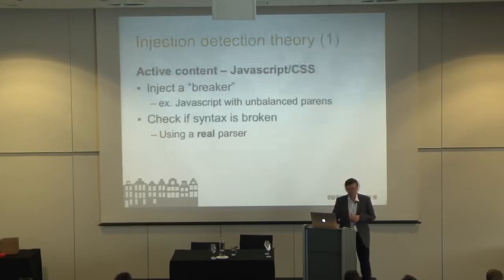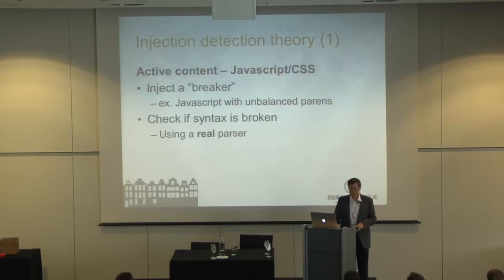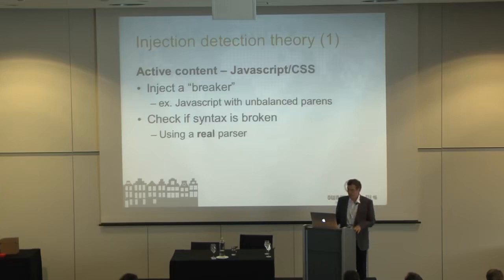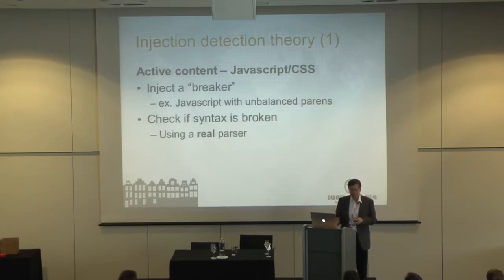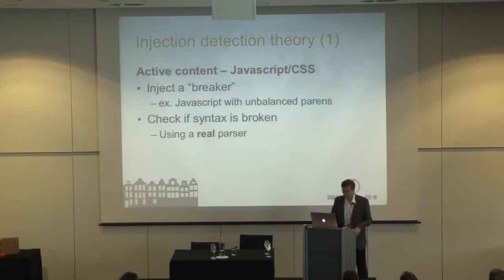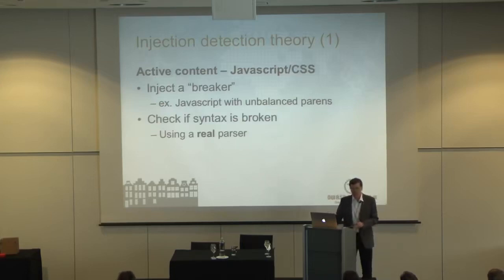I have a theory about how injection detection should be done. There are two parts: one is active content — JavaScript, CSS — those languages have a regular grammar, so they're more like normal languages, and if you put a malformed string it will break. Unlike HTML, which really doesn't have a grammar and is defined by the parser which will map up and fix any broken input. So we can inject a 'breaker' — maybe you noticed I showed the alert with an opening parenthesis that is not valid JavaScript, unbalanced parentheses — and then we check if the syntax is broken; if so, it's a problem. But the best way to do it is using a real parser, not regular expressions.